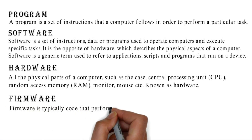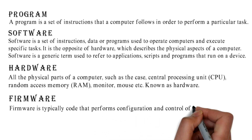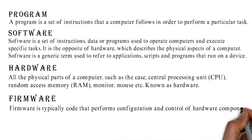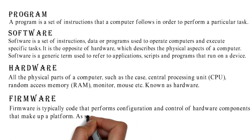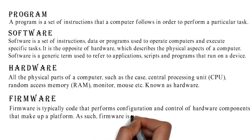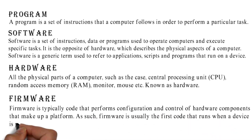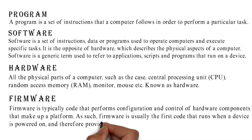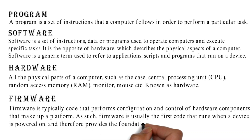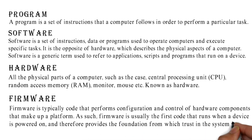Firmware is typically code that performs configuration and control of hardware components that make up a platform. It is usually the first code that runs when a device is powered on, and therefore provides the foundation from which trust in the system is built.